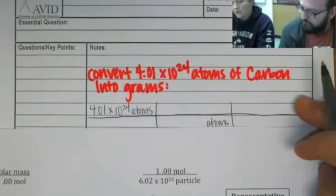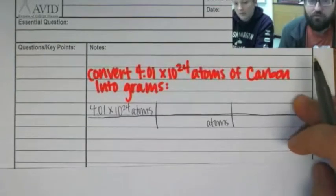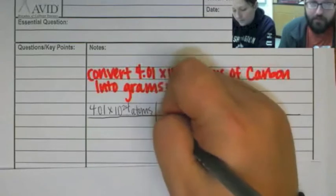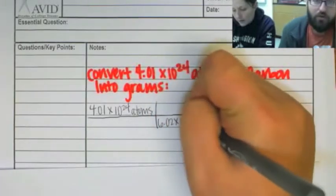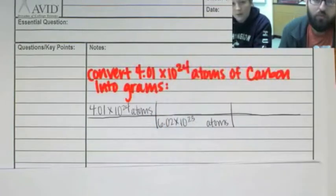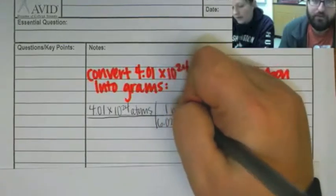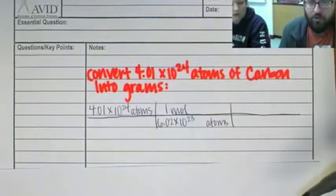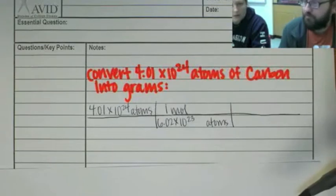So I'm going to use 6.02 times 10 to the 23rd on the bottom. Right. Because that's how many atoms you have. And then I do the 1 mole on top? 1 mole goes on top. Okay. Why can't I just go to grams? That's what I'm looking for. Because there's no conversion factor between atoms and grams. You have to go to the mole first. Okay. So you're going to make me do multiple steps.